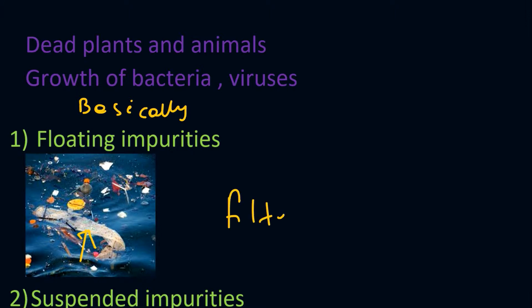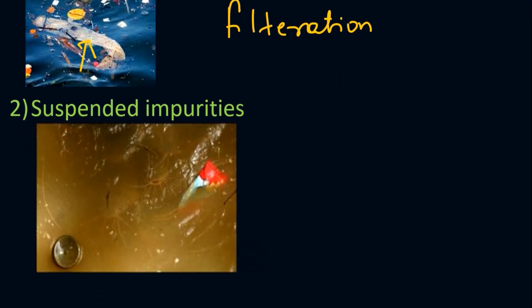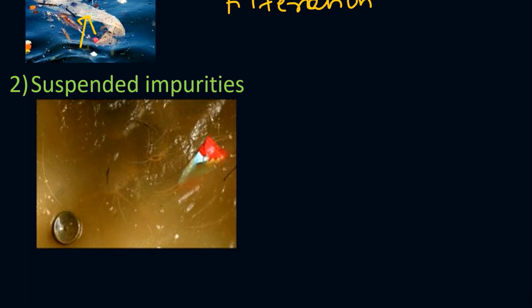The second type is suspended impurities. Suspended impurities are those that do not float on the water and do not settle down either. These include inorganic materials like sand and clay, and organic materials like dead animals. These are all examples of suspended impurities.